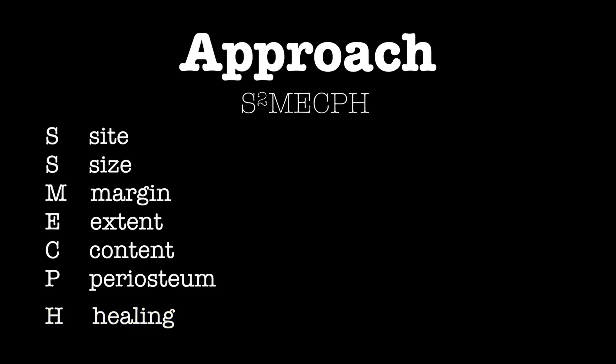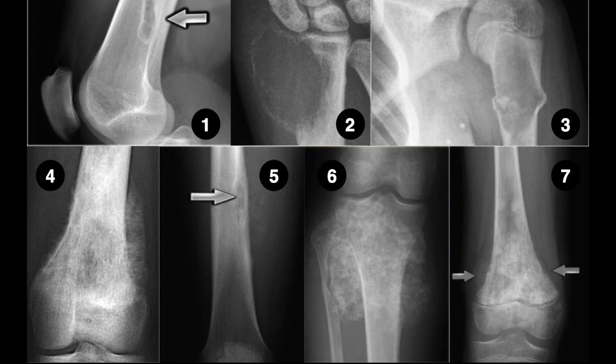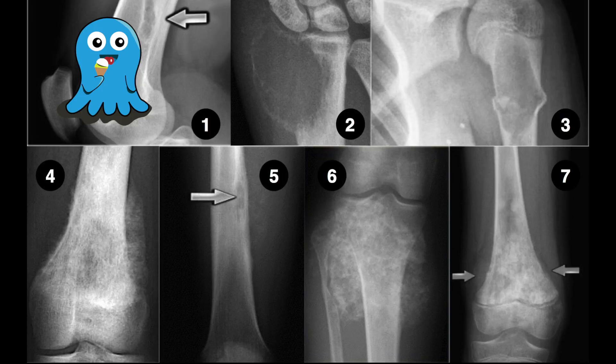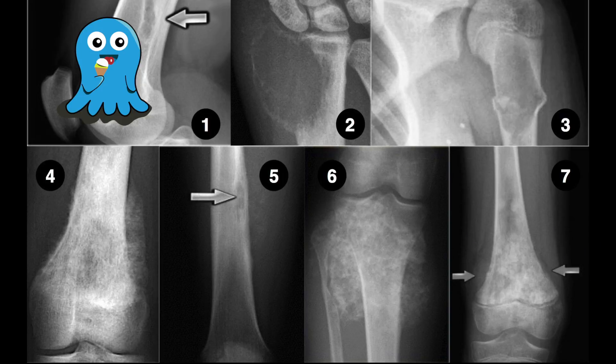By the end of this video you should be comfortable describing bone lesions using this approach, and as a bonus, hopefully you will be able to make a few diagnoses. The top row of tumours, labelled 1 to 3, are benign and the bottom row are malignant tumours. You will hopefully have a better understanding as to why this is so by the end of this video.